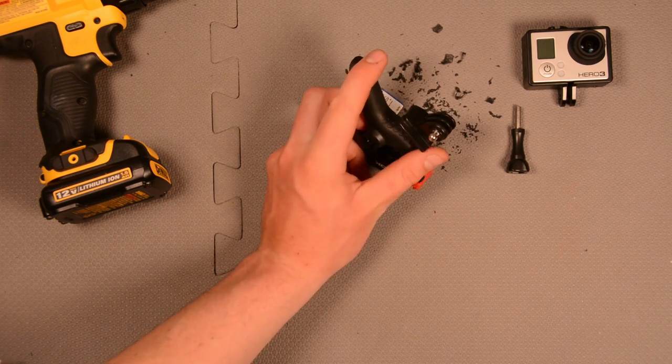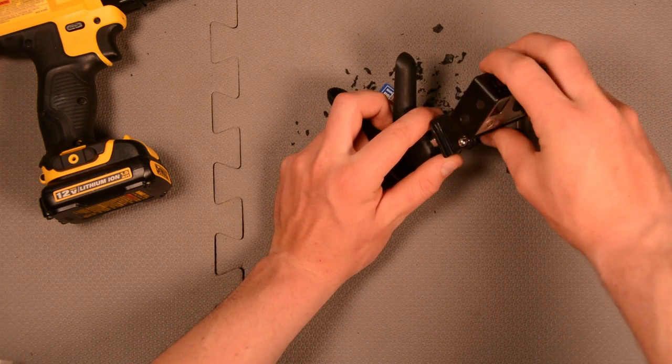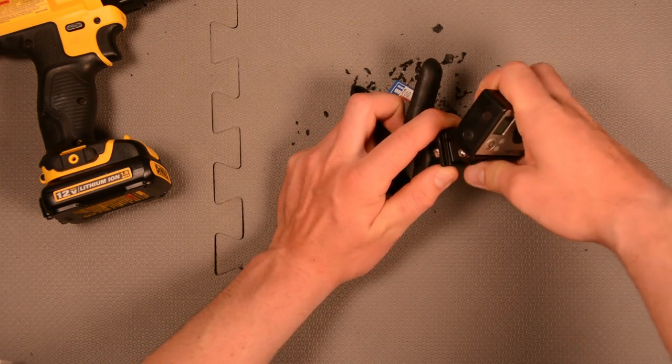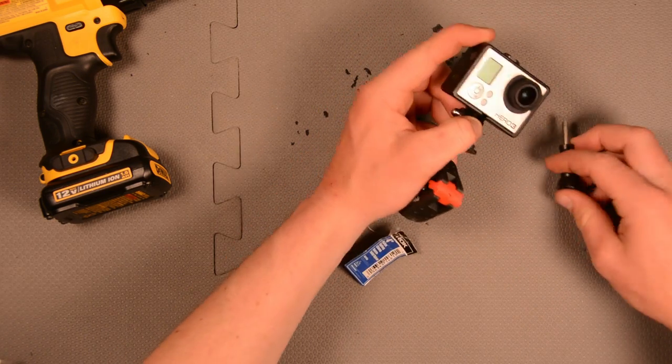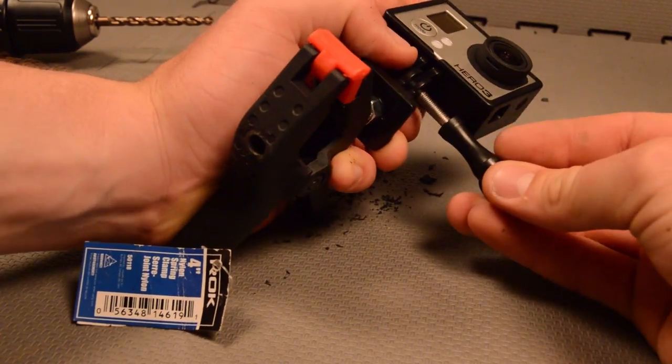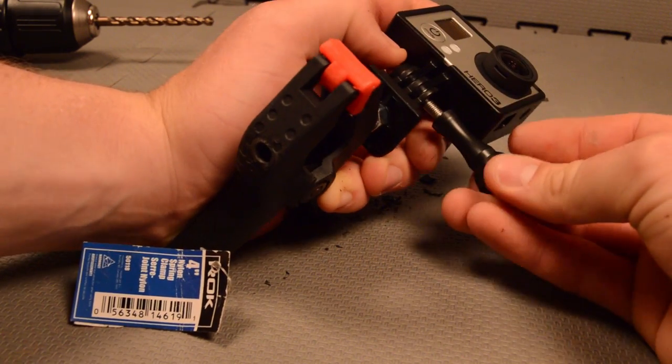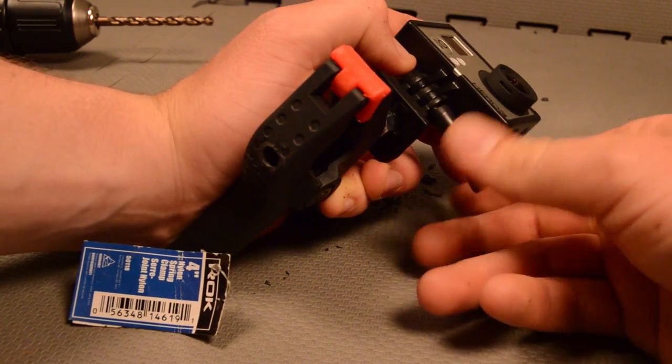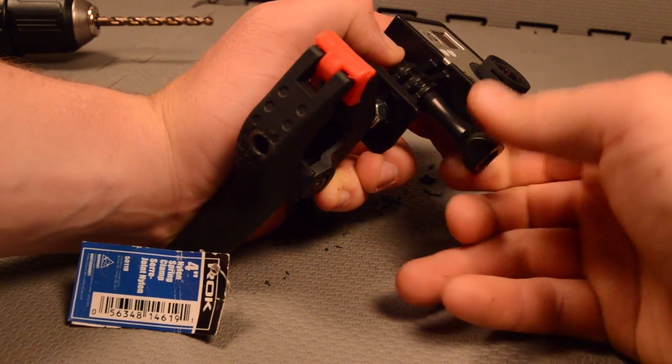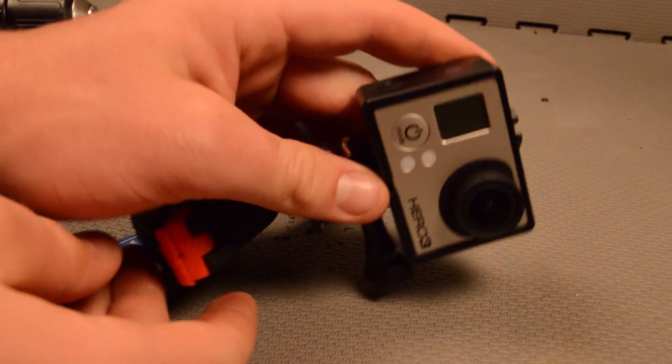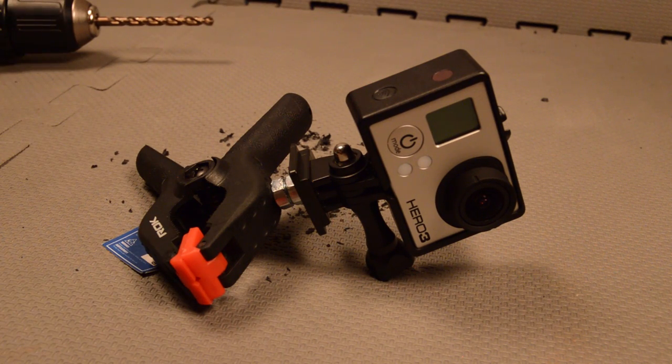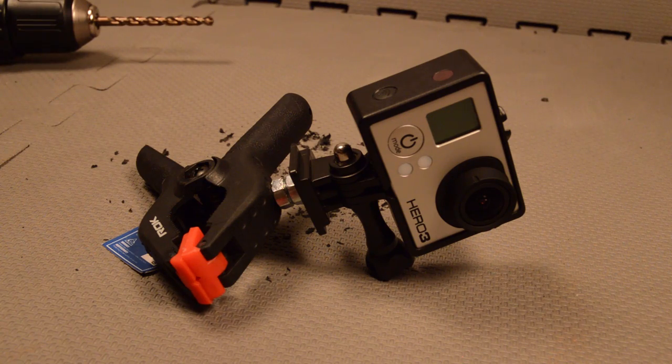Then all we have to do is mount our GoPro. To do this, we just slide it into the tripod mount, take the GoPro bolt, screw it in. And then just like that, we've made our GoPro clamp mount.